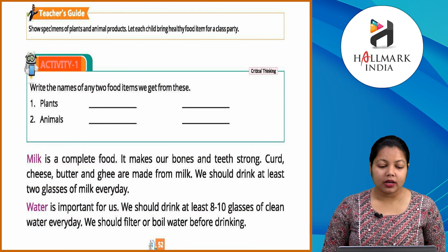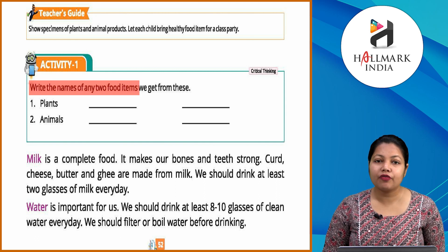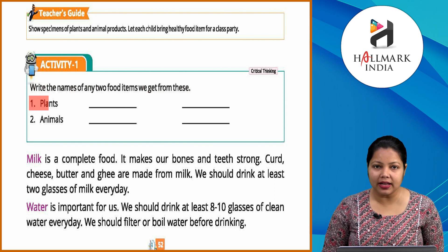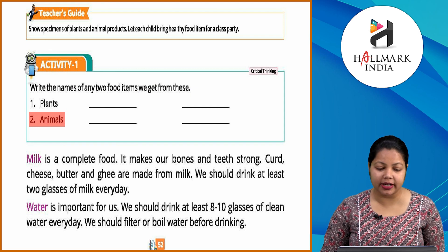Activity 1. Read the names of any two food items we get from these: plants and animals. Yap khud se karenge.